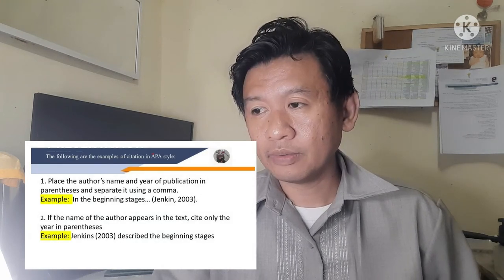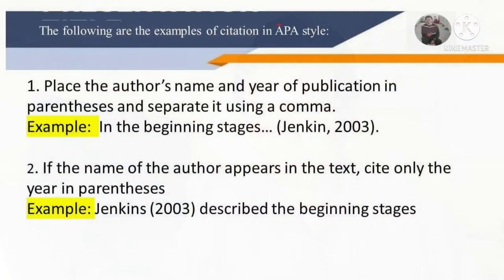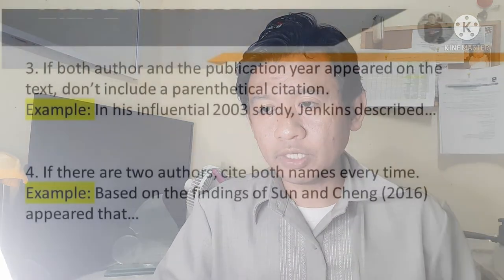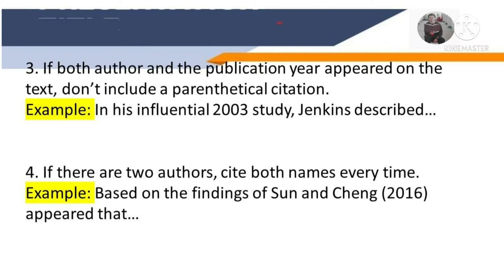The following are examples of citation in APA style. Number one: place the author's name and year of publication in parentheses and separate them using a comma — for example, in the beginning stages (Jenkins, 2003). Number two: if the name of the author appears in the text, cite only the year in parentheses — Jenkins (2003) described the beginning stages. If both author and publication year appear in the text, don't include a parenthetical citation — for example, in his influential 2003 study, Jenkins described. If there are two authors, cite both names every time — based on the findings of Sun and Cheng (2016), it appeared that...